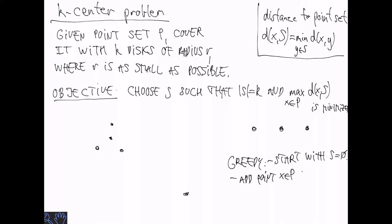So in other words, in each step, we add the point x such that the distance from x to the current s is maximized. And we repeat this until we have a set of size k.